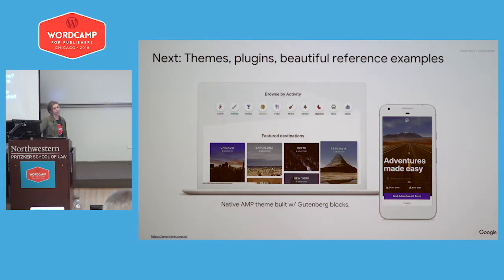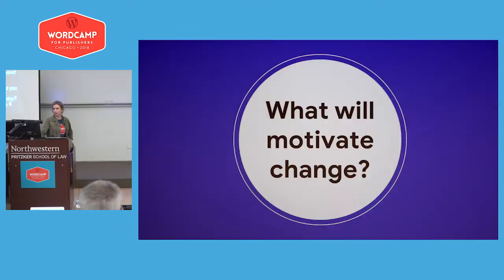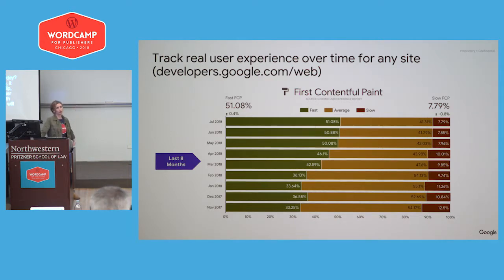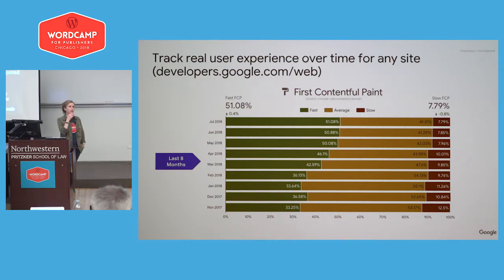Q: What did you say became available yesterday? A: It was the Chrome User Experience Report combined with Google Data Studio, which lets you generate a report showing how your site or any other domain in the CrUX database has performed month over month. It's available for free, and if you go to developers.google.com/web, you should find the announcement along with a video walking you through how to set it up.